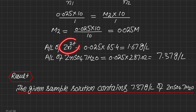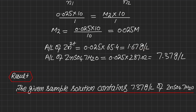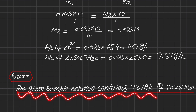To determine the amount per liter of zinc ions, we multiply the molarity by the atomic weight of zinc, giving 1.67 g/L. To find the amount per liter of zinc sulfate·7H2O, we multiply the molarity (0.025 M) by the molecular weight of ZnSO4·7H2O (287.02 g/mol), giving a net amount of 7.37 g/L. Therefore the result of this titration is that the given sample solution contains 7.37 g/L of ZnSO4·7H2O.